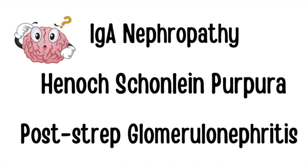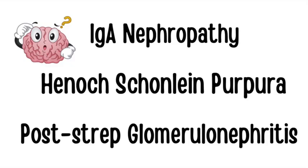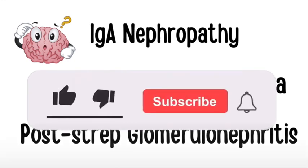Medical disorders with overlapping features are a favorite for examiners. In this section we'll be focusing on IgA nephropathy, Henoch-Schönlein purpura, and post-strep glomerulonephritis. We'll discuss high-yield ways these are commonly tested on your internal medicine shelf, surgery shelf, family medicine shelf, pediatric shelf, and Step 2 exam. We'll also be doing questions to highlight key points.